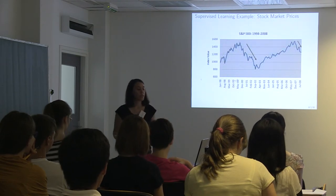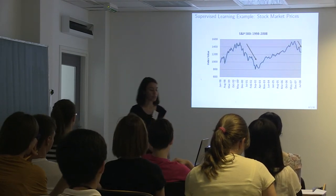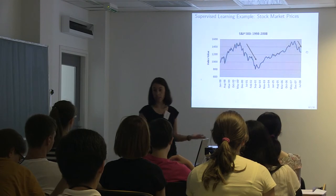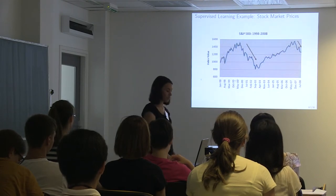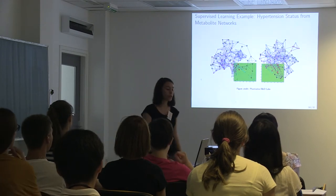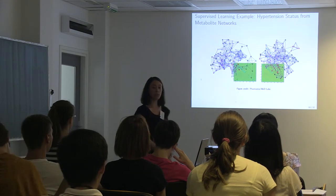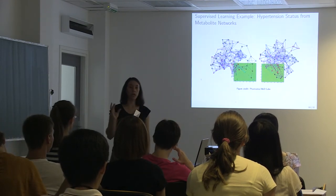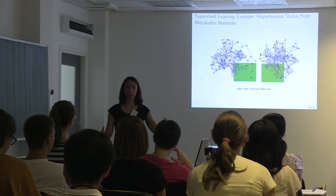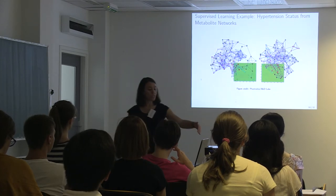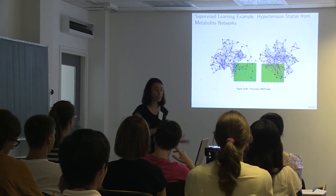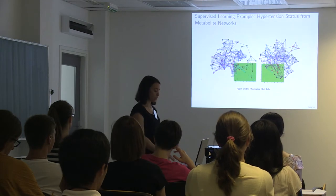We can also predict stock market prices — we track how stock values change and try to predict future values; you can make lots of money this way, or lose a lot. A more complex example involves building a network from metabolite expression data and using it to predict hypertension status. We can see that cases and controls have different networks, which is useful.